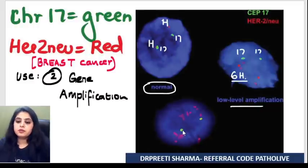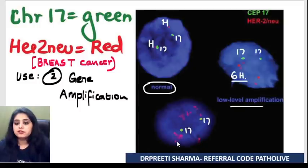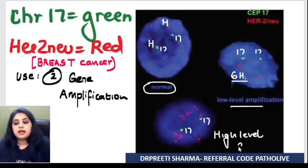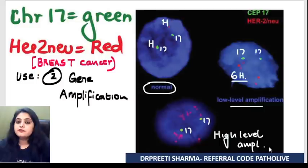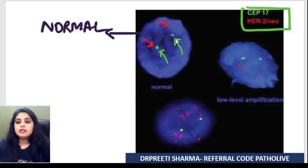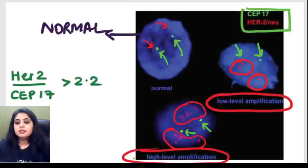Looking at the next cell: chromosome 17 is the usual pair, but I can't even count the number of red dots — they are way too many. This is a high-level amplification of HER2/neu. So: the first is normal, the second is low-level amplification, and the third is high-level amplification.